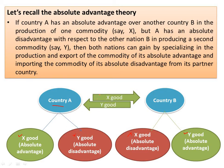Under such a situation, if A specializes in the production of x and imports y from country B, and simultaneously B specializes in the production of y and imports x from country A, then both countries will gain from international trade. This is Adam Smith's view of international trade. But the question arises: what will happen if country A has absolute advantage in both commodities, and whether trade will be beneficial for B if B has absolute disadvantage in both goods x and y? The answer is given by David Ricardo in his comparative advantage theory.